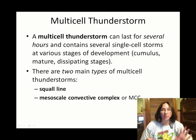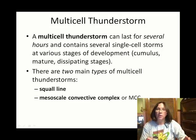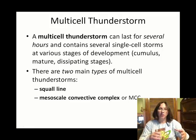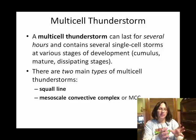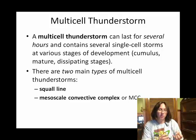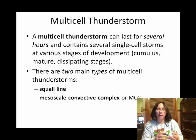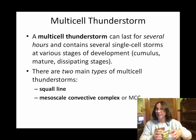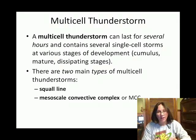We're going to take it up another notch. We've talked about how thunderstorms occur in these cells, and these cells go through three stages: cumulus, mature, and dissipating. And then we talked about there are types of cells called supercells.